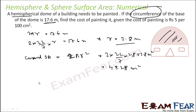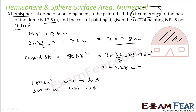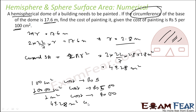Once we have the curved surface area, we can find the cost of painting. The cost is given as rupees 5 per 100 cm², and since 10,000 cm² = 1 m², the cost per 1 m² is rupees 500. We have 49.28 m², so the total cost is 49.28 × 500 = rupees 24,640.